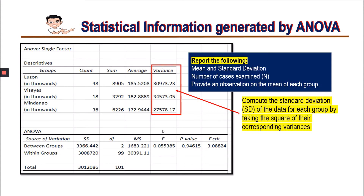The second thing to report is the number of cases examined — that is the total number of data collected from the three independent groups. We simply add 48, 18, and 36. The last thing is to provide an observation on the mean of each group.